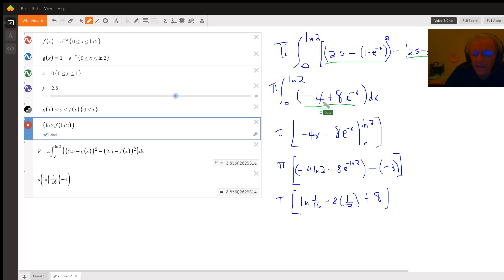And then you take the antiderivative of that expression. You get minus 4x minus 8 e to the minus x. We're going to evaluate from 0 to the natural log of 2, multiply by pi.